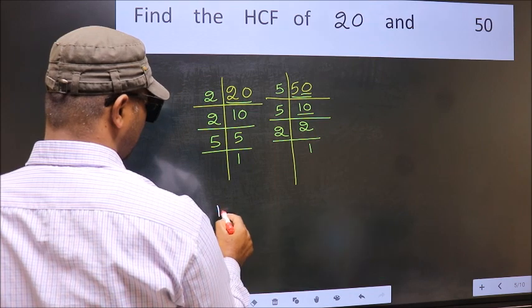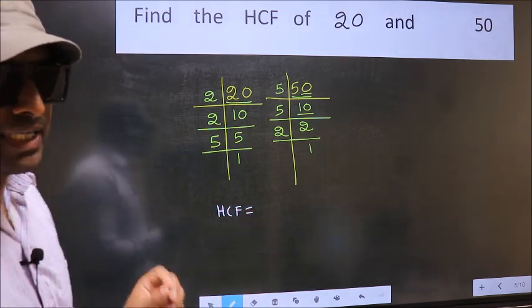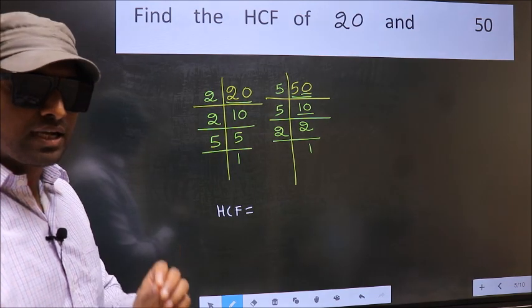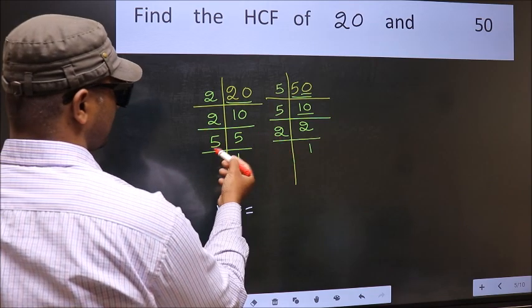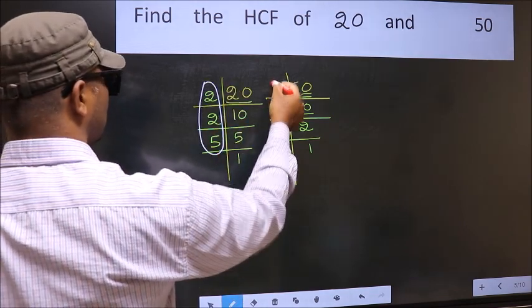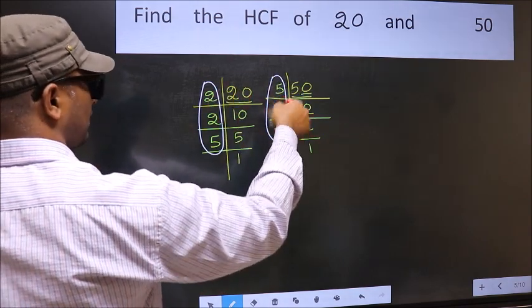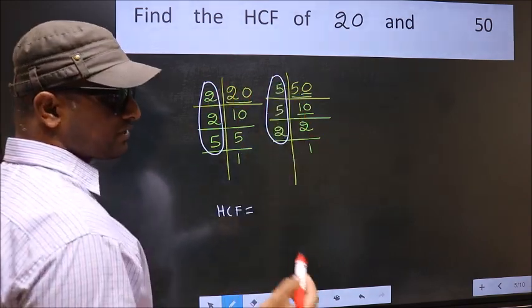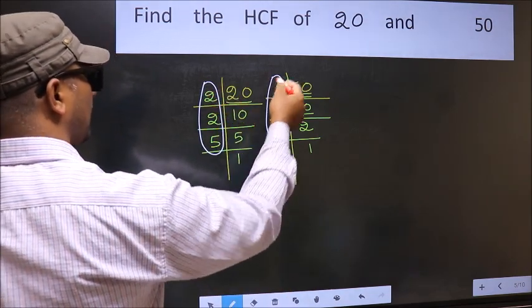Therefore our HCF is the product of the numbers which should be present in these two places. That is here and also here. So now let us find the numbers which should be present here and here.